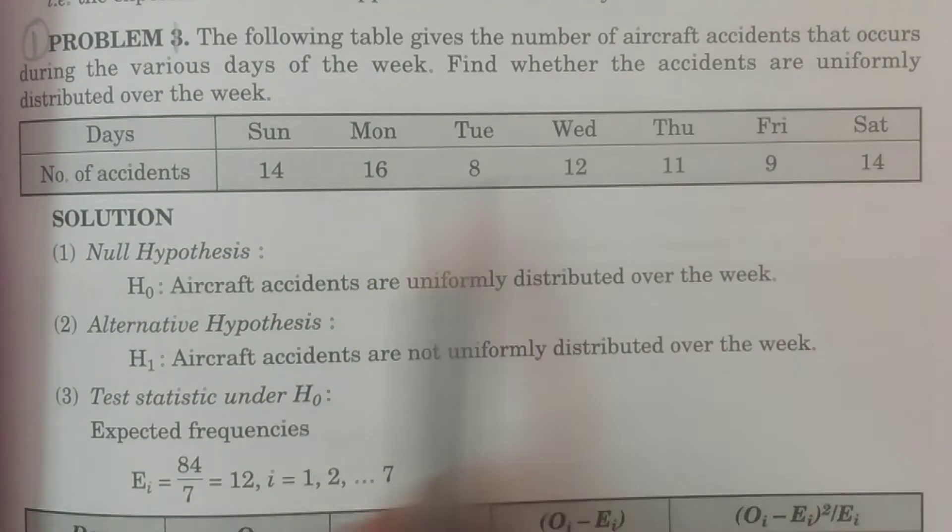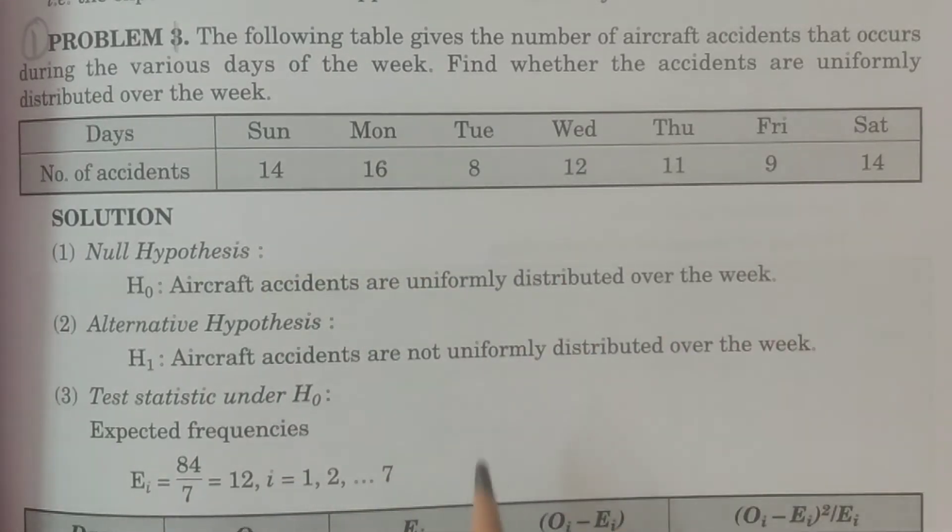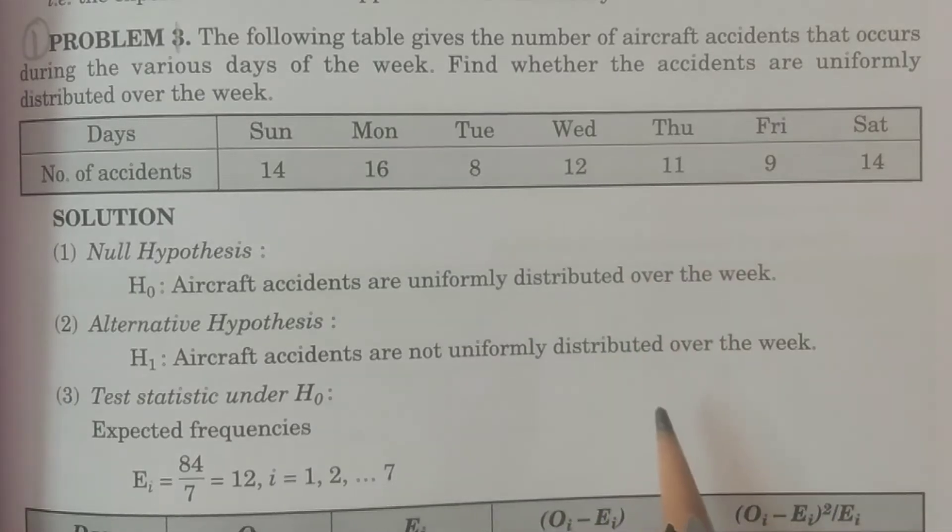Sunday, Monday, Tuesday, number of accidents Sunday 14, Monday 16, etc. is given. On the observation, this is the data is given. Now what you have to consider is very simple.